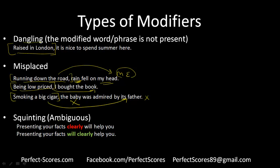Squinting or ambiguous modifiers are very rare but difficult to spot. 'Presenting your facts clearly will help you' — you don't know if clearly is modifying 'presenting your facts clearly' or 'clearly will help you.' The correct versions would be 'presenting your facts will clearly help you' or 'presenting your facts in a clear way will help you.'